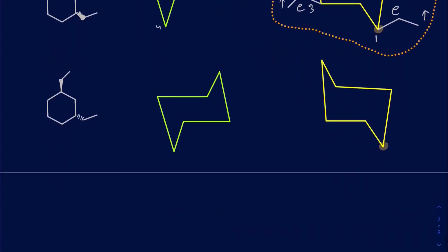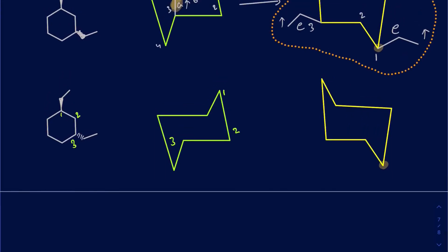Now let's draw the second geometrical isomer — the trans 1,3-diethylcyclohexane. On carbon one, I have the ethyl group pointed up, and on carbon three it needs to be pointed down. The axial on the third position points in the same direction as the axial on the first one — so the second ethyl group needs to be on the equatorial, pointed down. That's going to be the equatorial position.